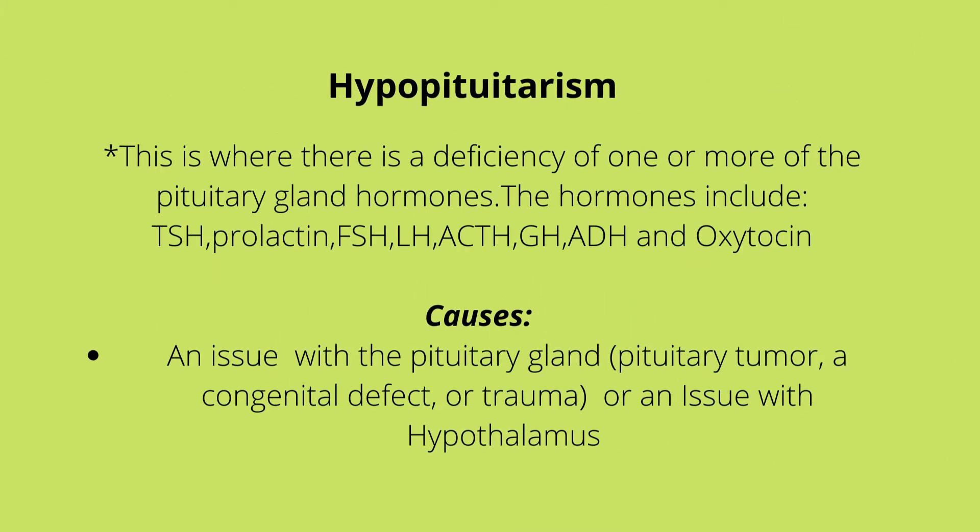Hypopituitorism is a deficiency of one or more of the pituitary gland hormones, and the hormones include TSH, prolactin, FSH, LH, ACTH, GH, ADH, and oxytocin.